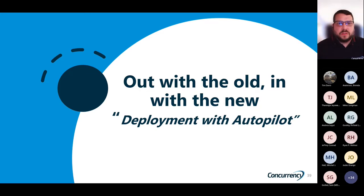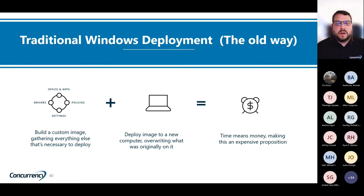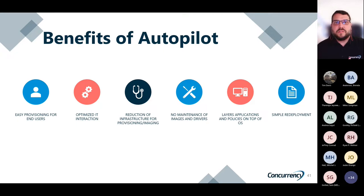Out with the old, in with the new. Let's look at deployment with Autopilot. The traditional way of deploying Windows was to build a custom image, deploy the image to the computer, and then deploy to the end user — but that requires a lot of time and infrastructure. With the benefits of Autopilot, we have easy provisioning for end users, optimized IT interaction, reduction of infrastructure for provisioning and imaging, no maintenance of images or drivers, the ability to layer on applications and policies, and then simple redeployment.